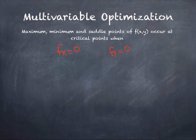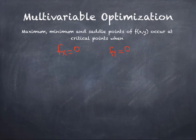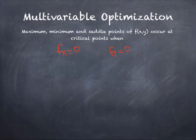Here I want to talk about how we apply multivariable optimization. Given any function in terms of x and y, we take the partial derivative with respect to x and set it equal to zero, and then we take the partial derivative with respect to y and set it equal to zero. From these two partial derivatives we are able to find the critical points.